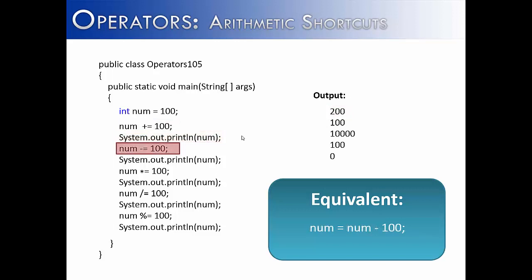Now, if we use the next shortcut, num minus equals 100, we'd be subtracting 100, and we would get 100. On the next line, we say num times equals 100. That would be 100 times 100, and that would give us 10,000.